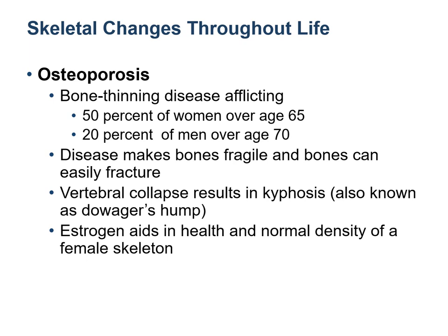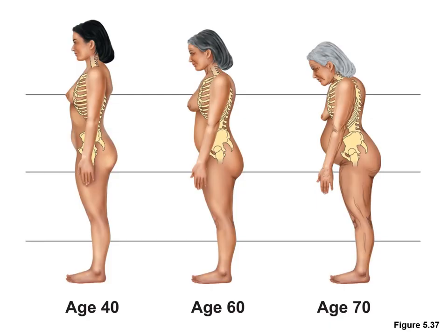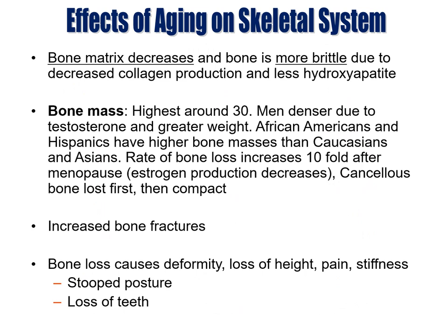Osteoporosis is the bone thinning disease, which affects both men and women in old age but has a more drastic effect in women after menopause. It makes bones fragile and susceptible to fractures. The effects of aging on the skeletal system include decreased bone density because osteoblasts are not working as efficiently, so bone matrix repair and maintenance is reduced. Bones become more fragile and prone to fractures. Bone loss causes deformity, loss of height, pain in the joints, stiffness, and loss of teeth.